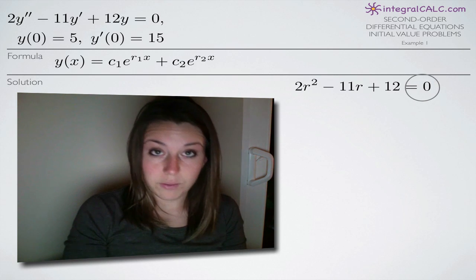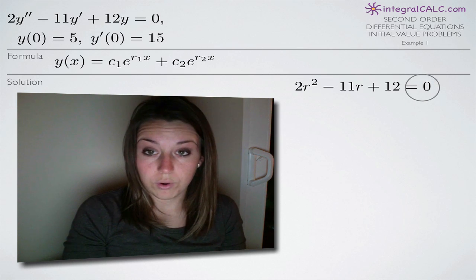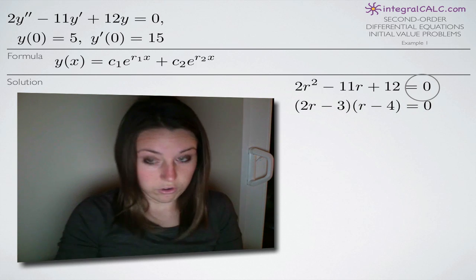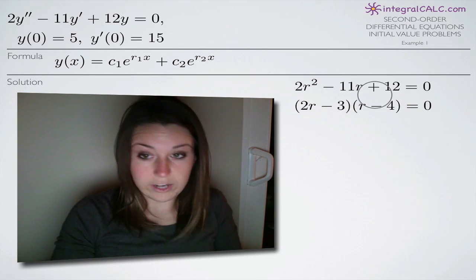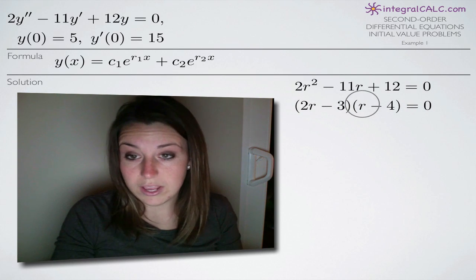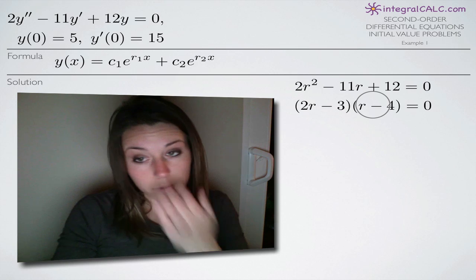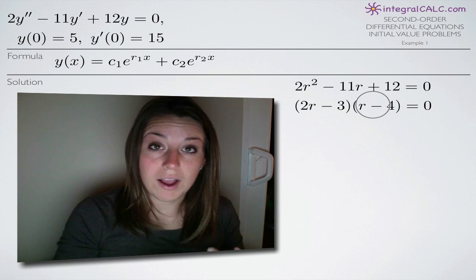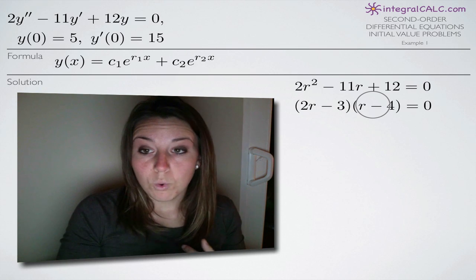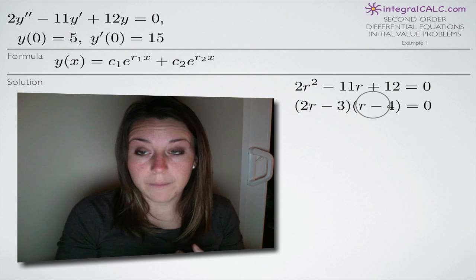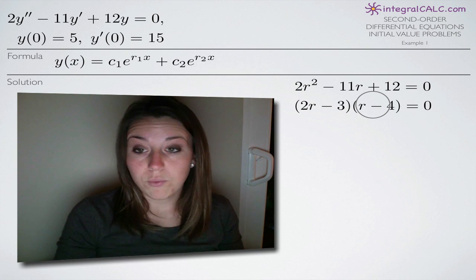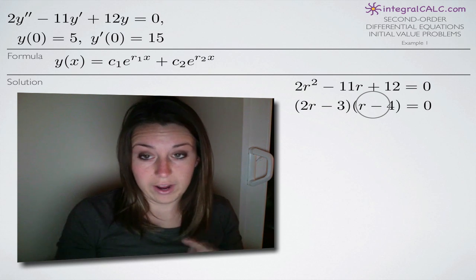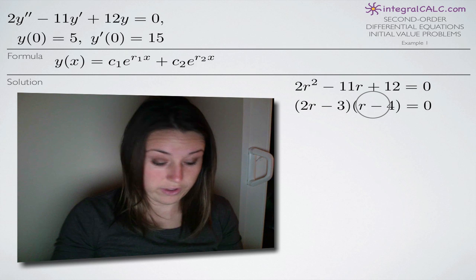Once we do that, we're going to solve for r. In this case, we can factor our equation to (2r minus 3)(r minus 4). If you can't factor, you can try completing the square or using the quadratic formula, but either way you want to solve for r and you're going to end up with two factors.